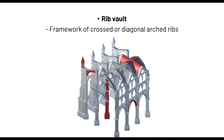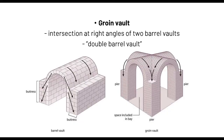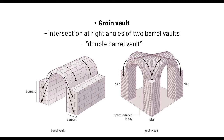We also have the rib vault. The rib vault is a framework of crossed or diagonal arch ribs. Going back — the groin vault is two arches extruded and joined together. The rib vault, from the word itself, adds ribs — visible structural rib members — to carry the weight, so it's not just the arch itself bearing the load. By incorporating ribs, the vault gains extra structural members, which is why rib vaults were widely used for high ceilings. The difference between rib and groin: the groin has no added elements, while the rib vault has ribs.